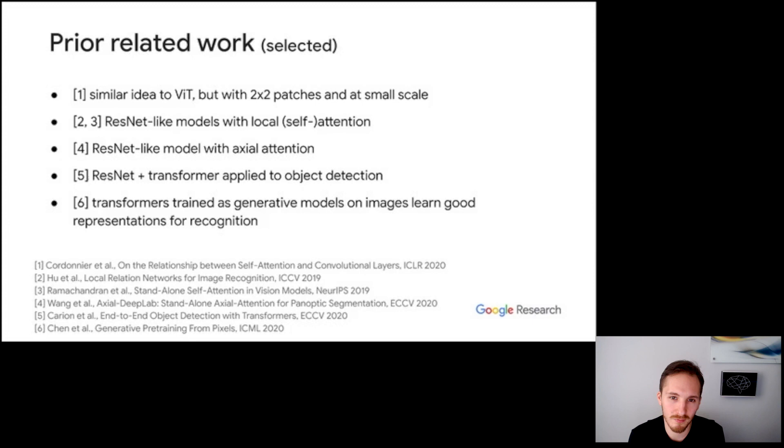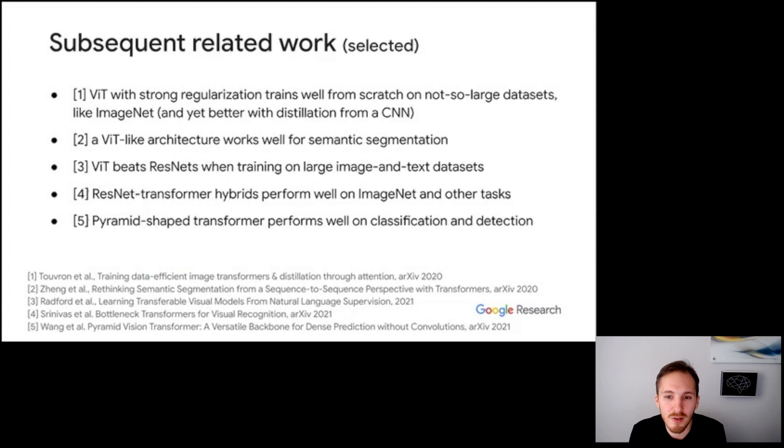Finally, a few words about related work. We are not the first ones to propose using attention for vision. For instance, Cordonnier and colleagues applied an architecture very similar to ours, but at small scale and with 2x2 patches. Hu and colleagues and Ramachandran and colleagues used ResNet-like models with convolutions replaced by local self-attention. Wang and colleagues experimented with ResNet-like models with convolutions replaced by axial attention. Carion and colleagues applied a ResNet-transformer hybrid to object detection. Chen et al. trained transformers on generative modeling of images and have then used representations learned by these models for recognition.